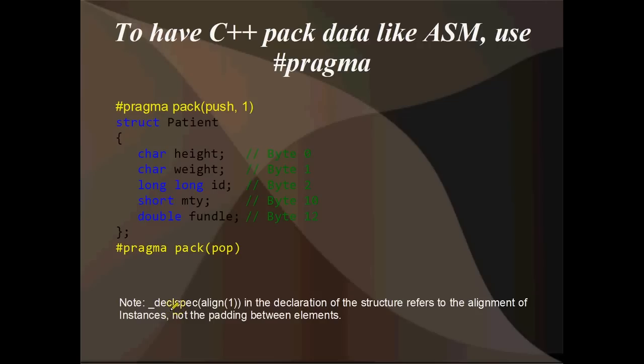Note declspec align 1 in the declaration of a structure refers to the alignment of instances, not the padding between elements. If we just put at the top of this declspec align 1 struct Patient, it's not going to align the members inside a Patient instance to 1. It's going to just align any instances of Patient to 1, which is no alignment at all, really. Okay, I hope that wasn't too confusing.